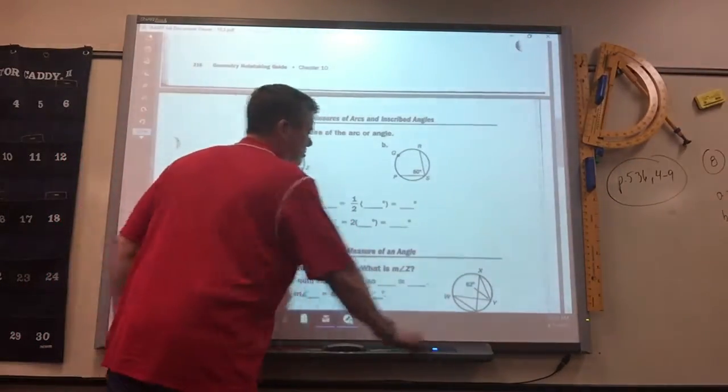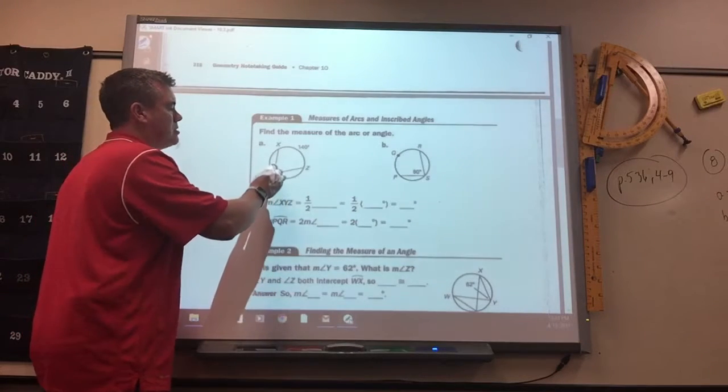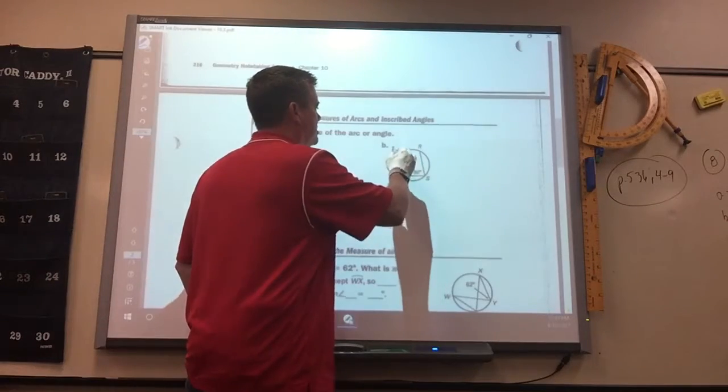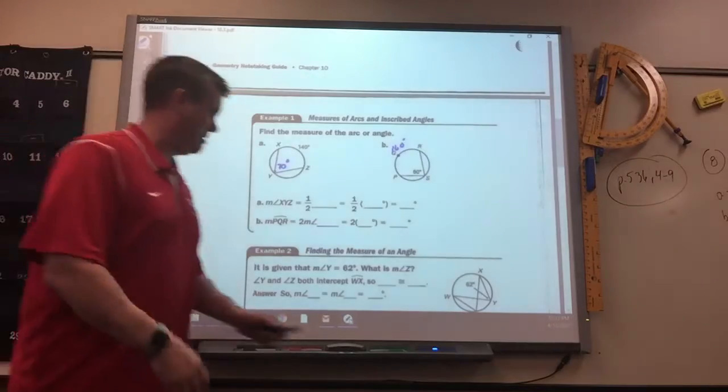Because an inscribed is half of the arc. So like I said, problems today. If this is 140, angle Y is 70. If this is 80, it's 160. Okay? Isn't that easy? Yeah.